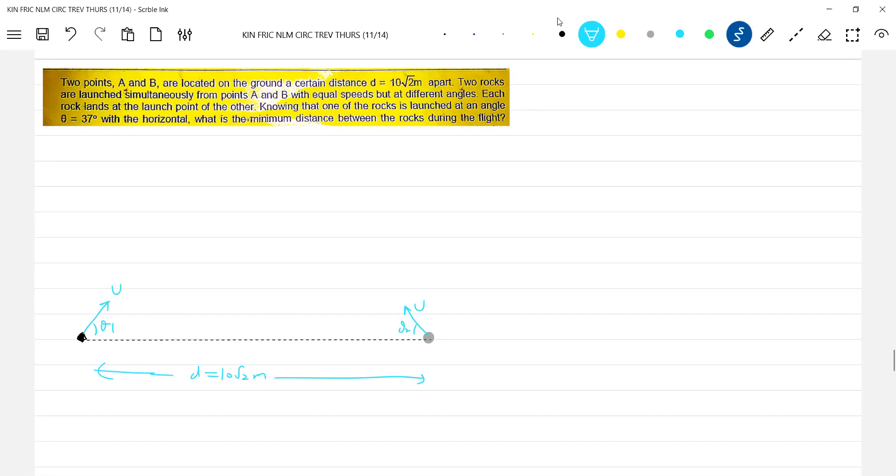Each rock lands at launch point knowing that one rock is launched at an angle theta with the horizontal. What is the minimum distance between the rocks during the flight?